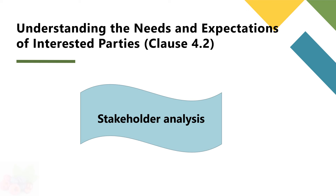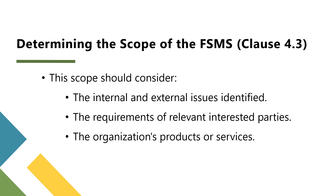Stakeholder analysis can be a valuable tool for mapping out the influence and interest of different parties, ensuring their needs are appropriately addressed. Clause 4.3 guides us in determining the scope of the food safety management system. This scope should consider the internal and external issues identified, the requirements of relevant interested parties, and the organization's products or services. The scope statement must clearly define the types of products, processes, services, and production sites included in the food safety management system.